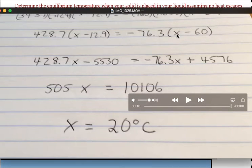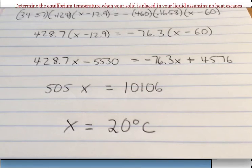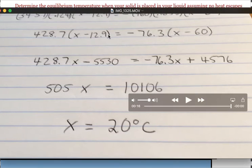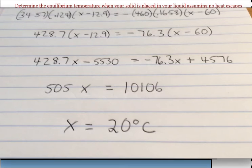Again, you make both the final temperature of the water and the final temperature of the metal x because when they stop exchanging heat, that is when they're in thermal equilibrium, they will have the same temperature.